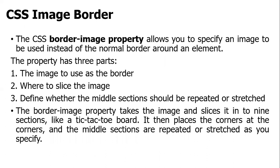For CSS image border, the border-image property allows you to specify an image to use instead of the normal border around an element. Three properties can be used: the image used for the border, where to slice it, and whether the middle section should be repeated or stretched. The border-image property takes the image and slices it into nine sections like a tic-tac-toe board, placing corners at the corners and repeating or stretching the middle sections as specified.